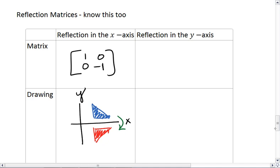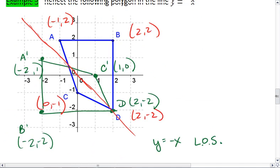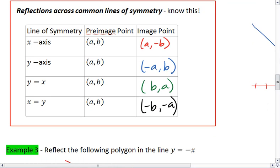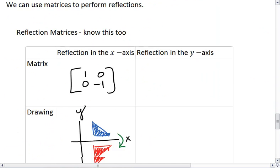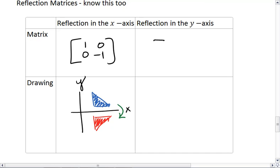We can also reflect across the y-axis. When we do that, we can look above our coordinates again. Our coordinates AB become negative AB. So our x-coordinate changes its sign, and our y-coordinate stays the same. The matrix for this reflection is negative 1, 0, 0, positive 1.